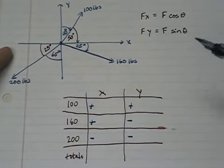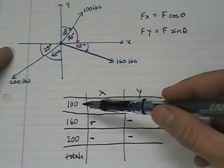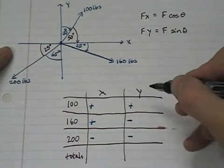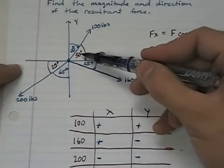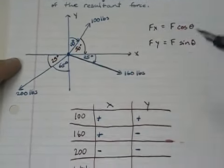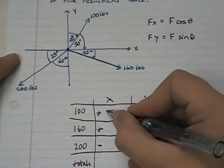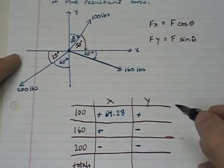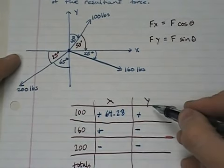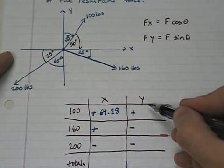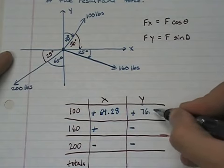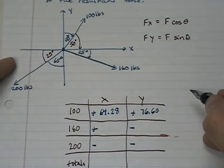And so what we're going to do is we're going to start with our 100 pound vector. The x component for the 100 pound vector would be 100 cosine of 50. So 100 cosine of 50 gives me 64.28 pounds. The y component will be 100 times the sine of 50. And 100 times sine of 50 is 76.60.